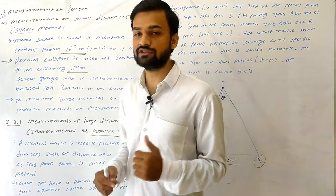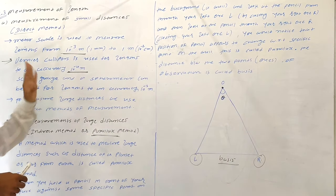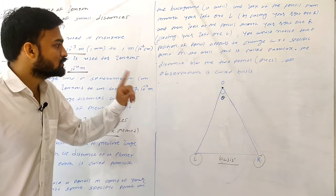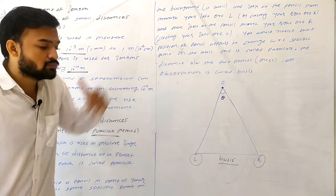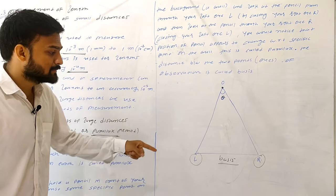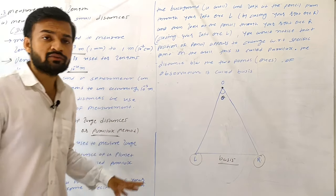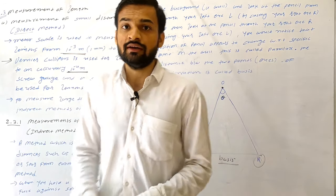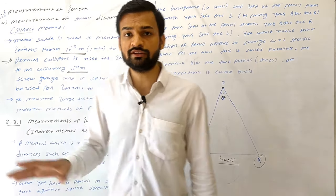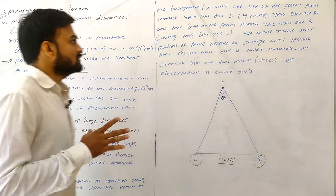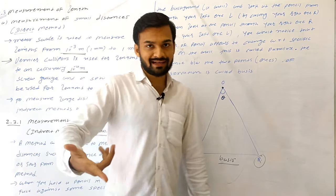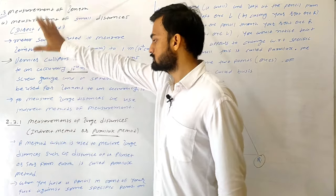For distances even smaller than that, we have screw gauge and spherometer — also shown here in the figure. Screw gauge and spherometer can measure distances to an accuracy of 10⁻⁵ meter. So these instruments allow us to measure small distances directly, which is why this is called the direct method.